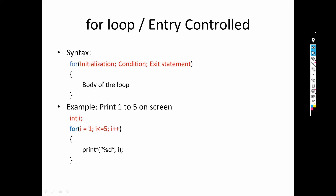Now we come directly to the for loop. When we look at the syntax of for loop, we can see how to adjust the initialization, condition, and exit statement. The keyword we use is 'for'. Within the brackets we write all three important things. Initialization is first, then condition, then exit statement, and all three terms are separated by semicolons.